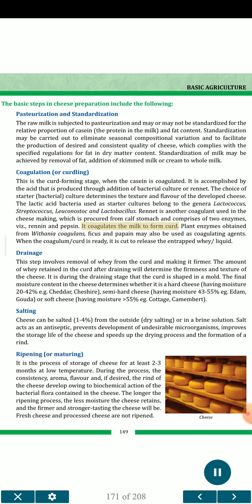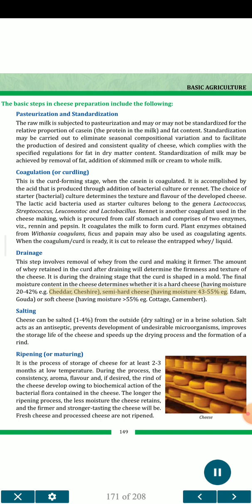Rennet is another coagulant used in cheese making, procured from calf stomach and comprising of two enzymes: rennin and pepsin. It coagulates the milk to form curd. Plant enzymes obtained from Britannia coagulants, ficus and papain may also be used as coagulating agents. When the coagulum (curd) is ready, it is cut to release the entrapped whey. (3) Drainage — this step involves removal of whey from the curd and making it firmer. The amount of whey retained in the curd after draining determines the firmness and texture of the cheese. The final moisture content determines whether it is hard cheese (moisture 20–42%, e.g., Cheddar, Cheshire), semi-hard cheese (moisture 43–55%, e.g., Edam, Gouda), or soft cheese (moisture greater than 55%, e.g., Cottage, Camembert).